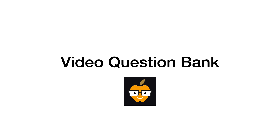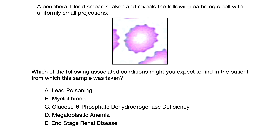It's time for another high-yield free USMLE practice question. Let's dive right into today's video question bank series. A peripheral blood smear is taken and reveals the following pathologic cell with uniformly small projections. Which of the following associated conditions might you expect to find in the patient from which this sample was taken?